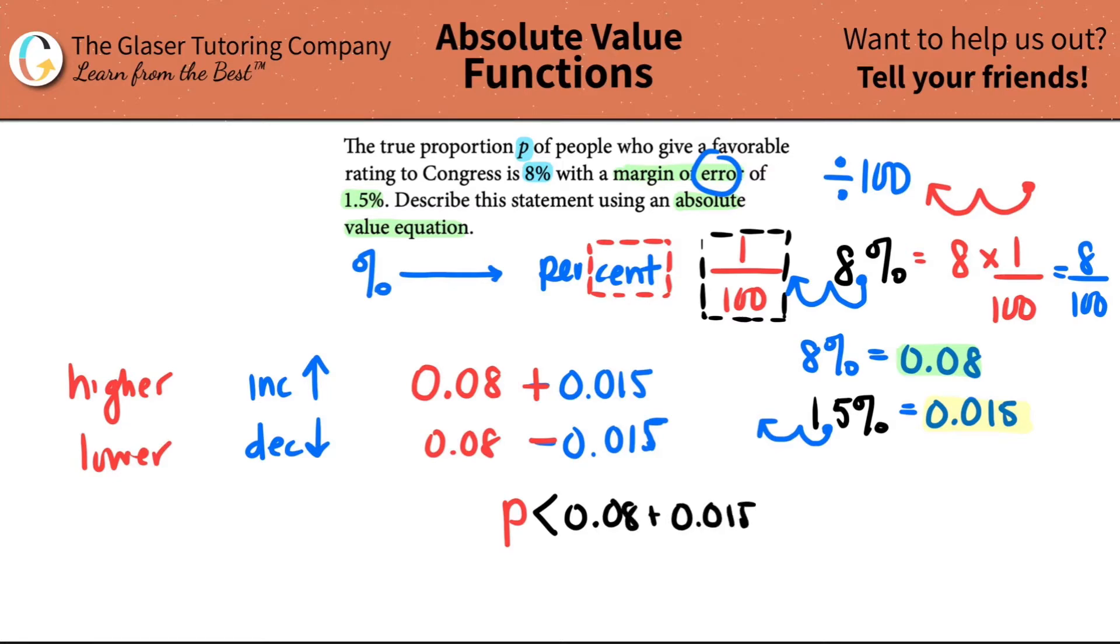And remember the alligator with the teeth is always going to the greater number. So it could be greater than or equal to P, right? This would be greater than or equal to P. And this would be on the lower number of things. So this would be the 0.08 minus 0.015. And now that's saying that P is the greater one out of this. So this is the lower margin of error. And this is the higher margin of error.